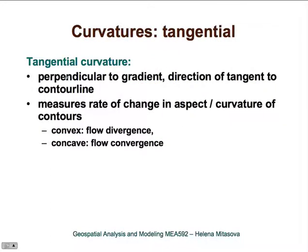Tangential curvature is measured perpendicular to the gradient and measures the rate of change in aspect. Convex tangential curvature will cause flow divergence, while concave tangential curvature will cause flow convergence.